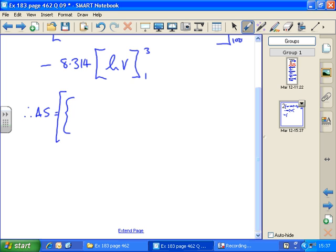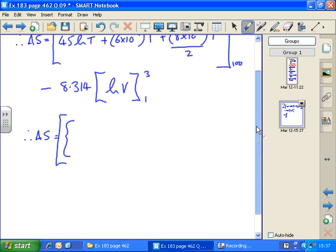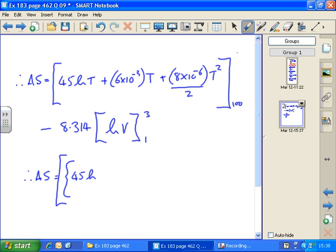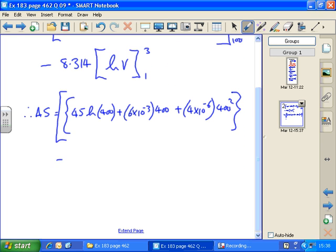Delta S equals, putting in the first limit for the first part of this integral. 45 log 400, plus 6 times 10 to the minus 3 times 400, plus 8 times 10 to the minus 6 over 2 is 4 times 10 to the minus 6, times 400 squared, minus, repeat.